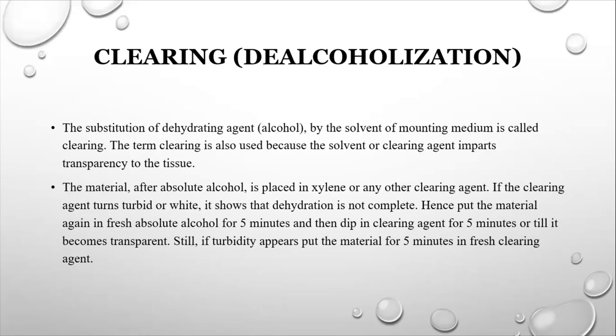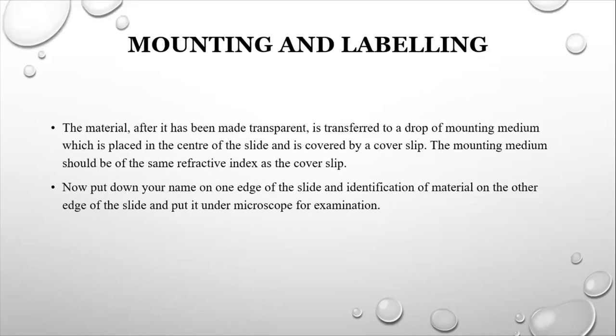Still, if turbidity appears, put the material for 5 minutes in fresh clearing agent. Last is mounting and labeling. The material, after it has been made transparent, is transferred to a drop of mounting medium which is placed in the center of the slide and is covered by a cover slip. The mounting medium should be of the same refractive index as the cover slip. Now put down your name on the edge of the slide and identification of the material on the other edge of the slide and put it under the microscope for examination.